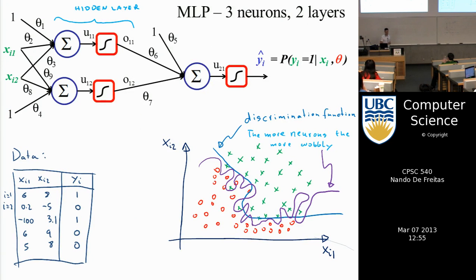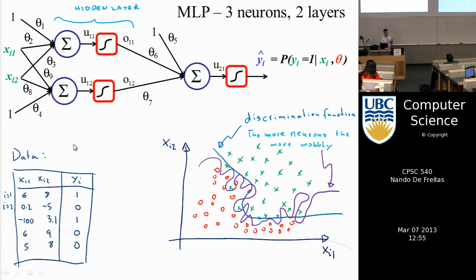The comeback answer was to introduce a more sophisticated neural network with a hidden layer. In neural network terminology, inputs form the input layer — like photoreceptors in the eye — then you go through a first layer of processing, then a second layer before producing the output. By making the model more complex, we can build non-linear gates that allow non-linear separating surfaces.